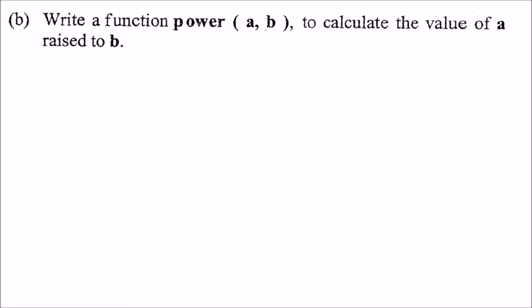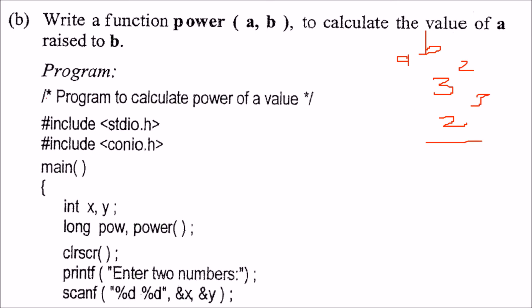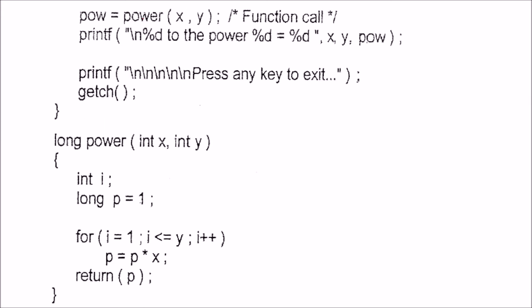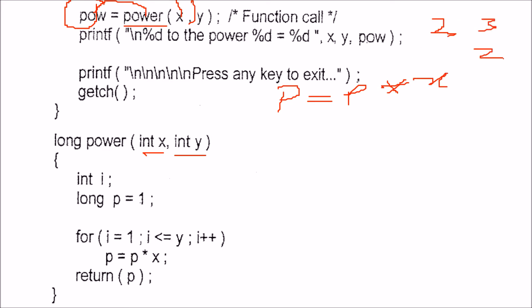Write a power function to calculate the value of a raised to the power b — say 3 to the power 2 or 2 to the power 3. We include the files, give the prototype of the power function, then accept values x and y. We call this function power and pass x and y, then print the value returned. Taking x as 2 and y as 3, initially p is 1, and the loop goes from 1 to y.